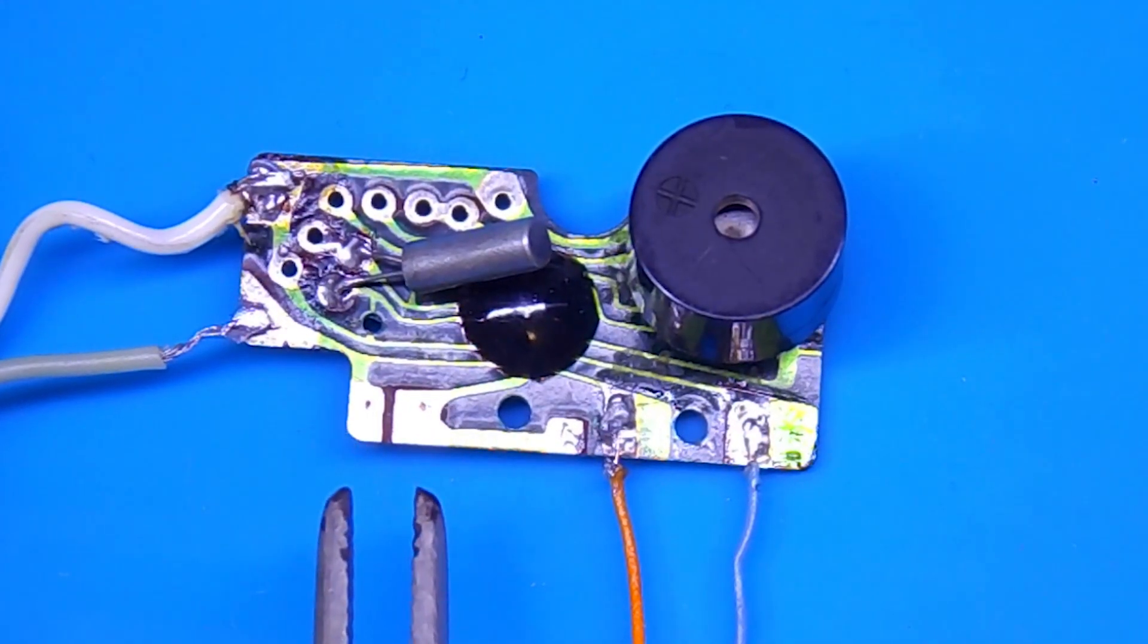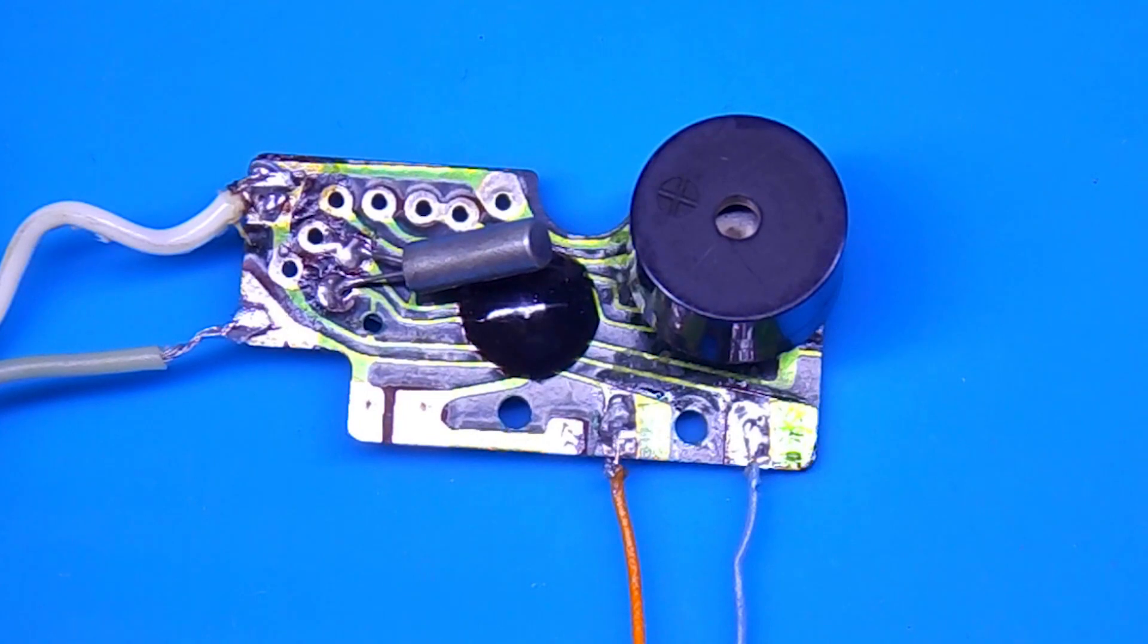A jumper must be placed on these contacts, so that they are permanently closed. And the buzzer is no longer needed. It must be removed.